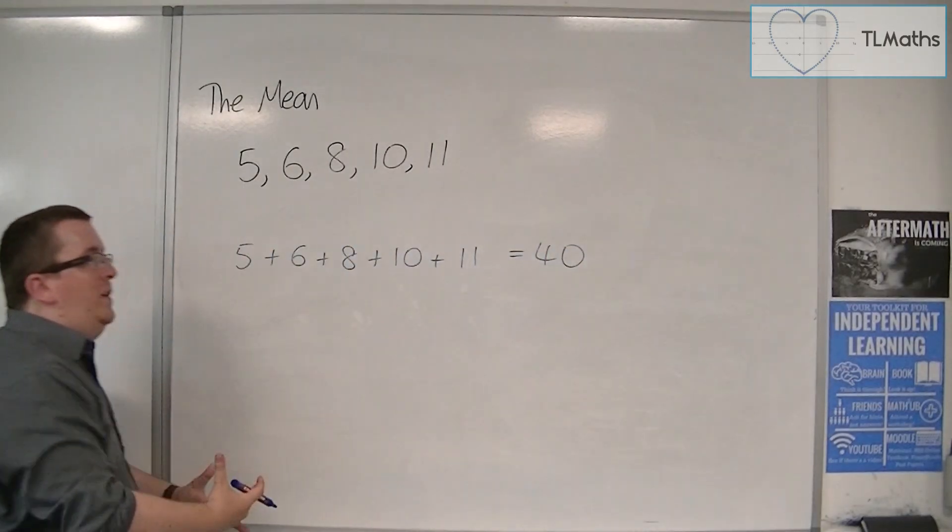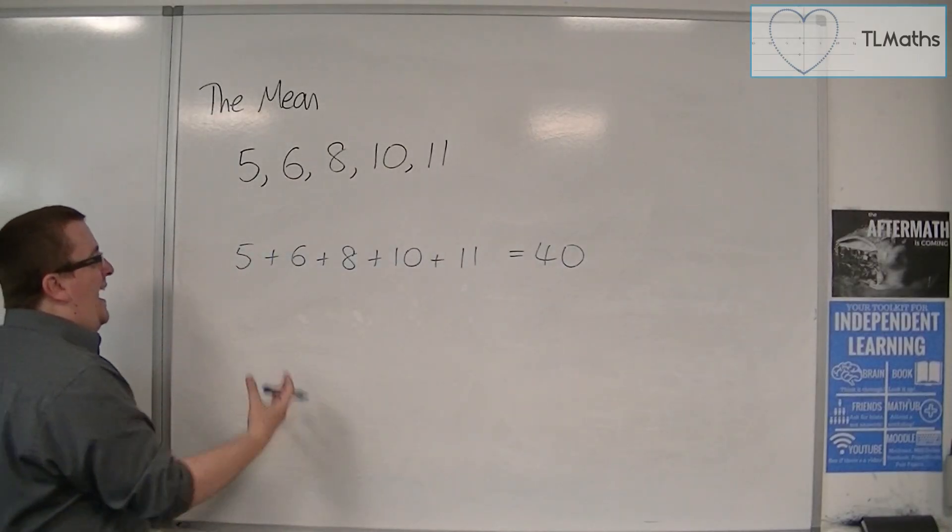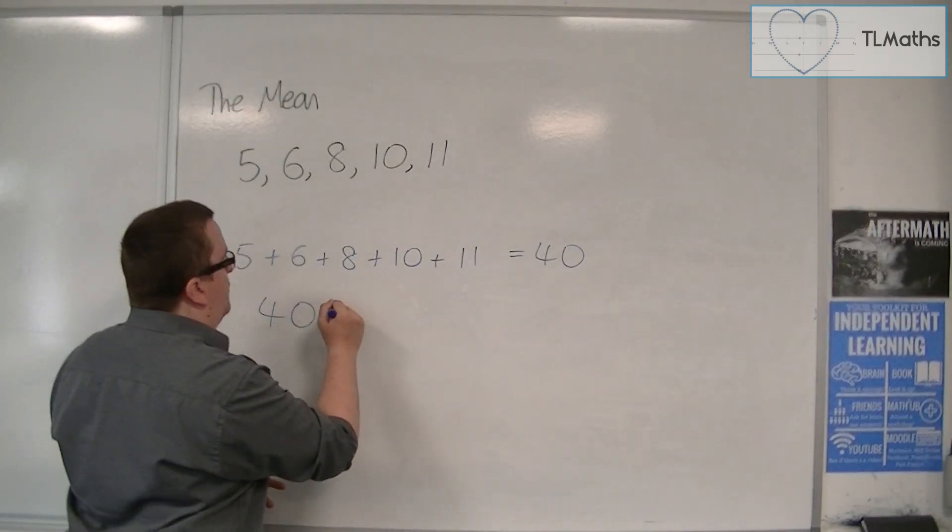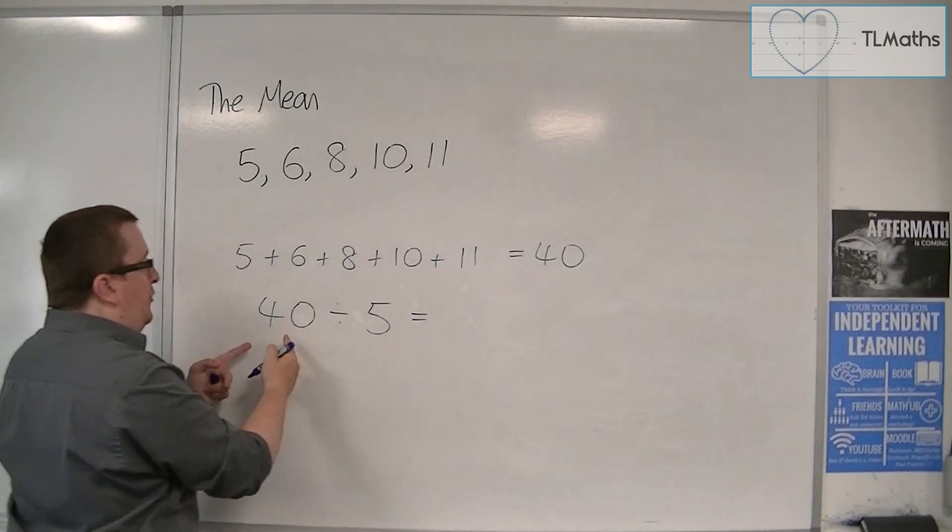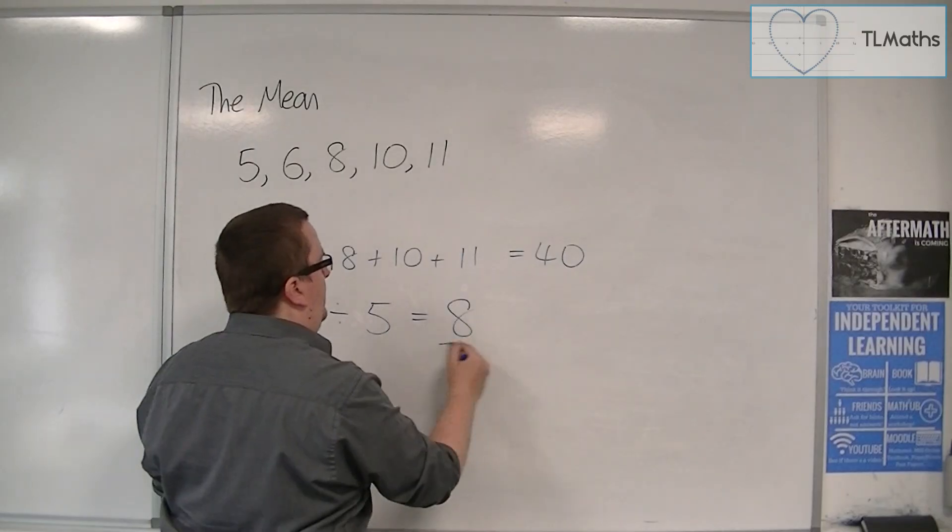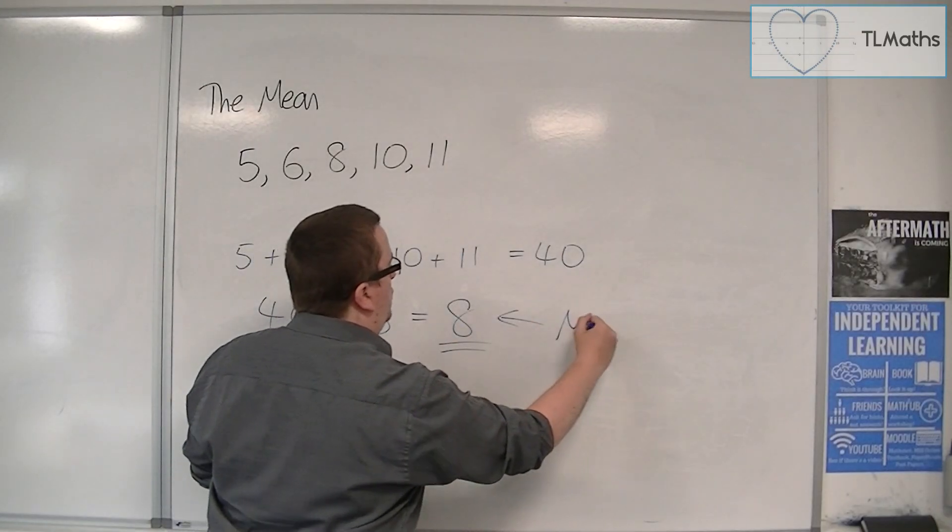And then we divide 40 by how many bits of information we have. So we had 5 bits of raw information. And so 40 divided by 5 is 8. And this is your mean.